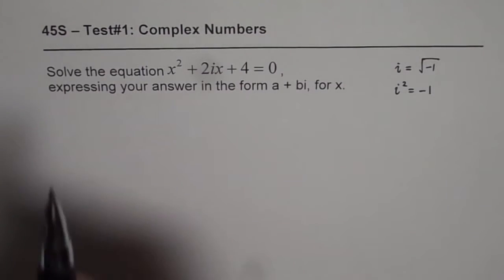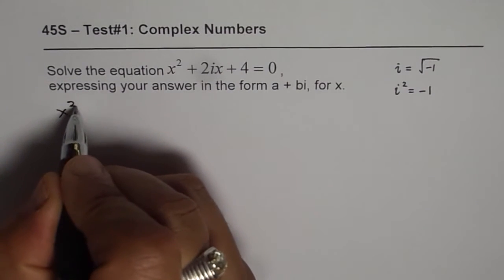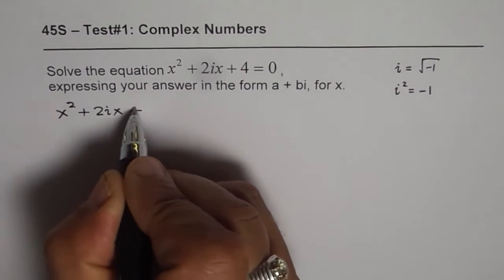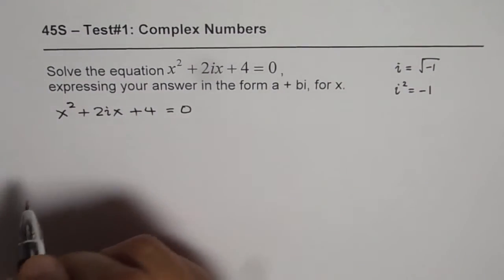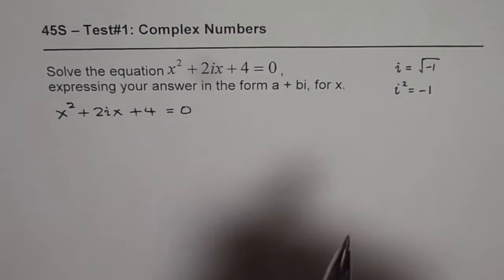Now let's try to solve this equation. We have x squared plus 2ix plus 4 equals 0. To solve this, we can apply the quadratic formula.